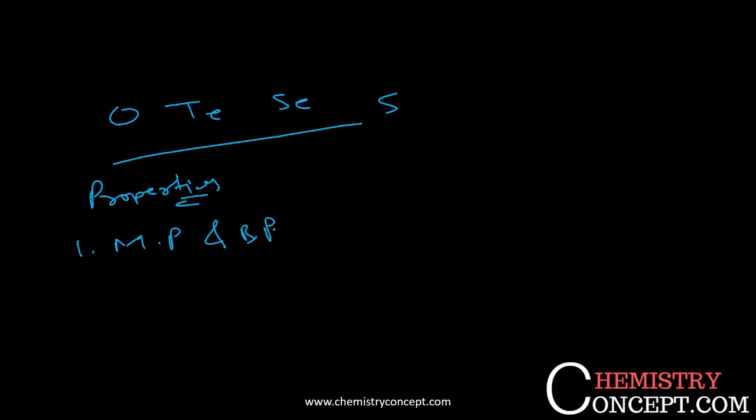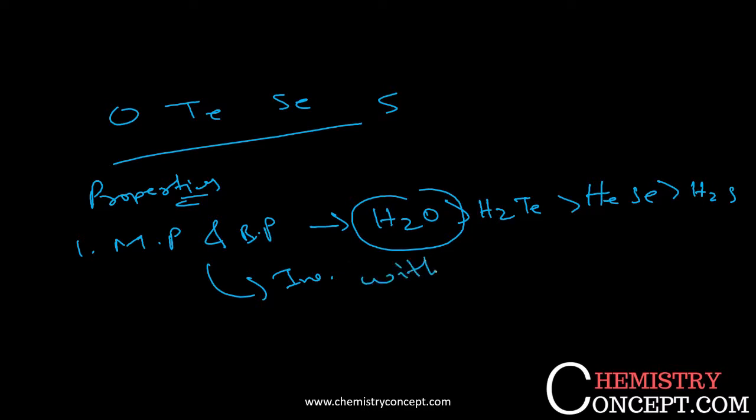The order is H2O having the highest melting and boiling point, then tellurium, then selenium, then sulfur. H2O has the highest melting and boiling point because H2O can form hydrogen bonding, which increases the melting and boiling point. Tellurium has high size, because of that it has high melting and boiling point, same as for selenium and sulfur. So melting and boiling point increases with hydrogen bonding and size of the central atom.